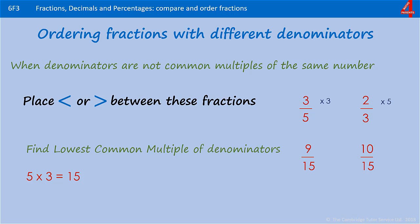Now the denominators are the same, it's clear to see which is bigger than the other. We can see that 9 fifteenths is smaller than 10 fifteenths. Remember the question asked you to compare three-fifths and two-thirds, so you need to put your smaller than symbol to show that three-fifths is smaller than two-thirds.